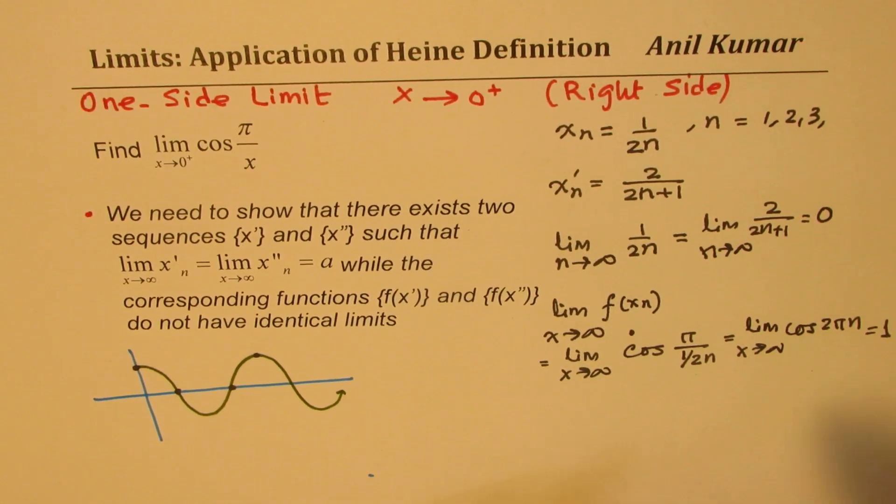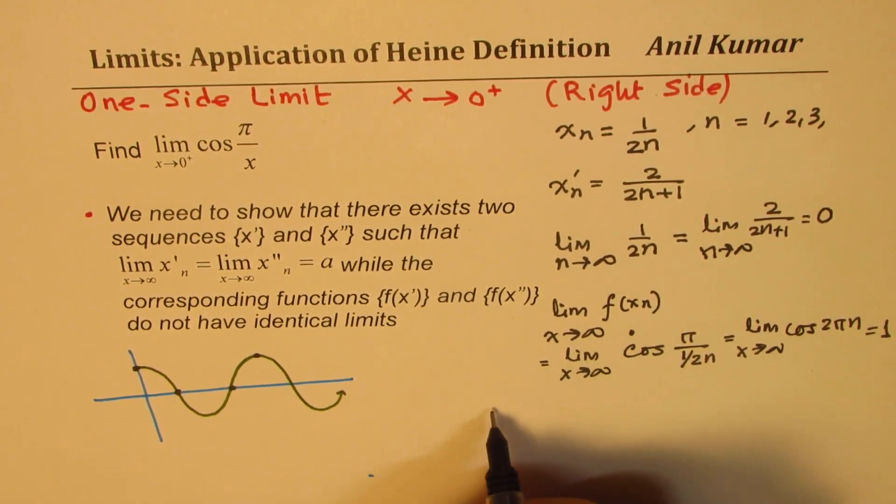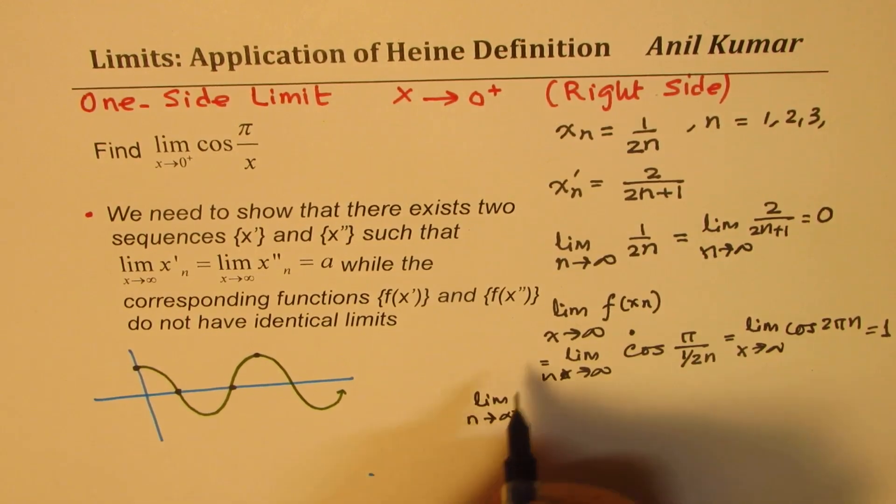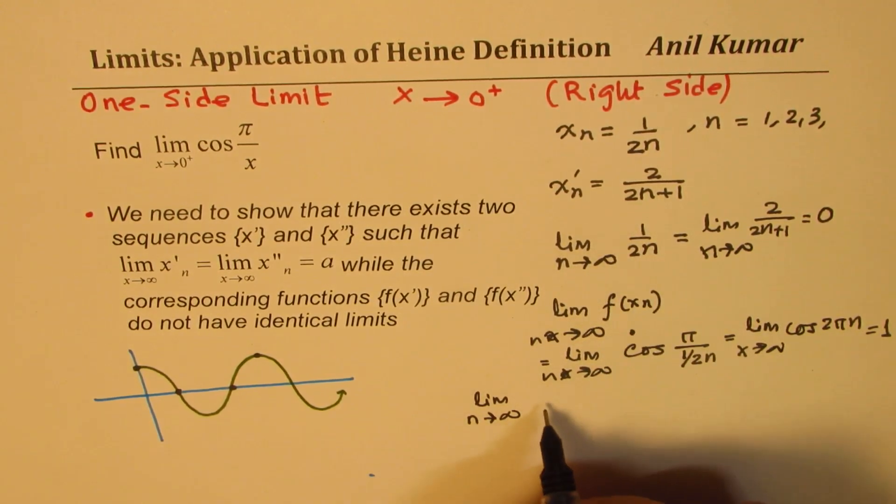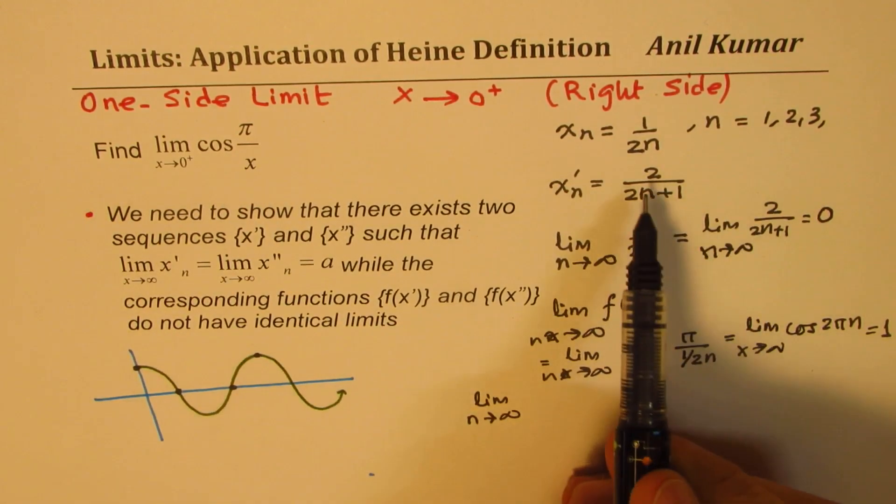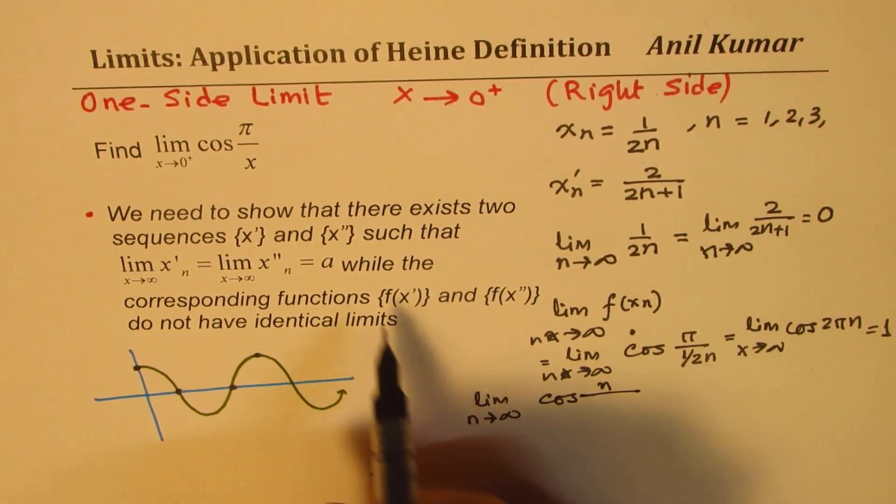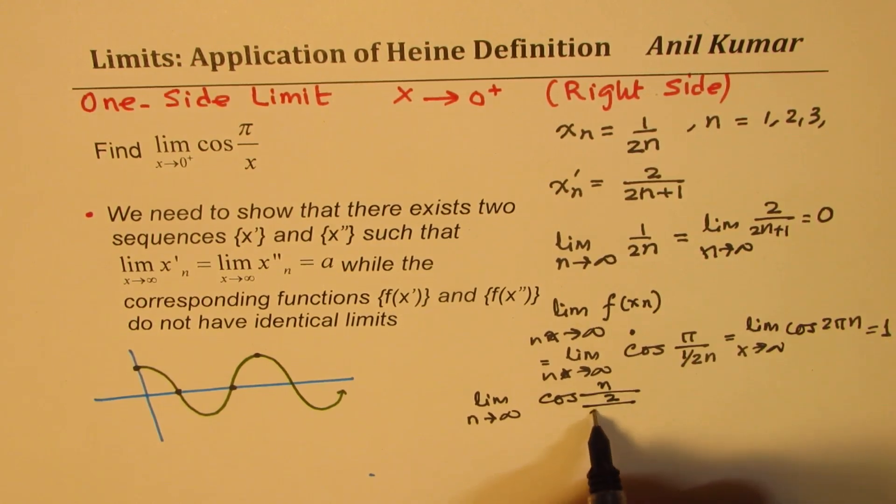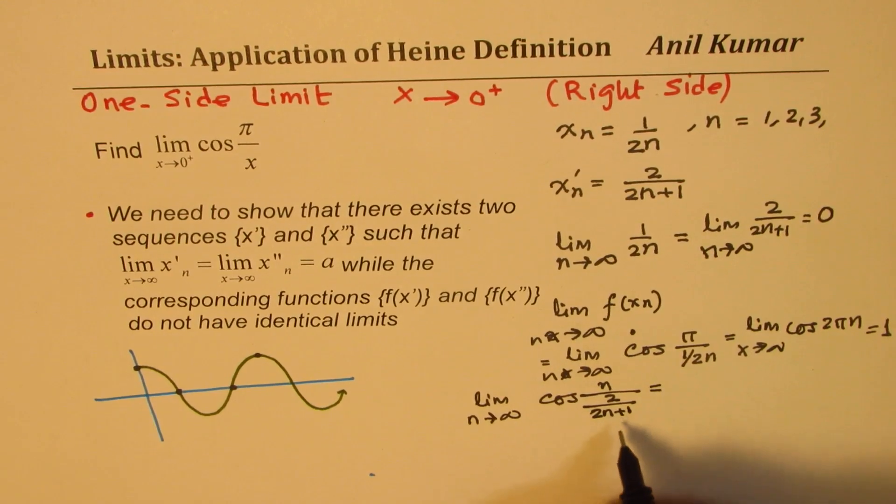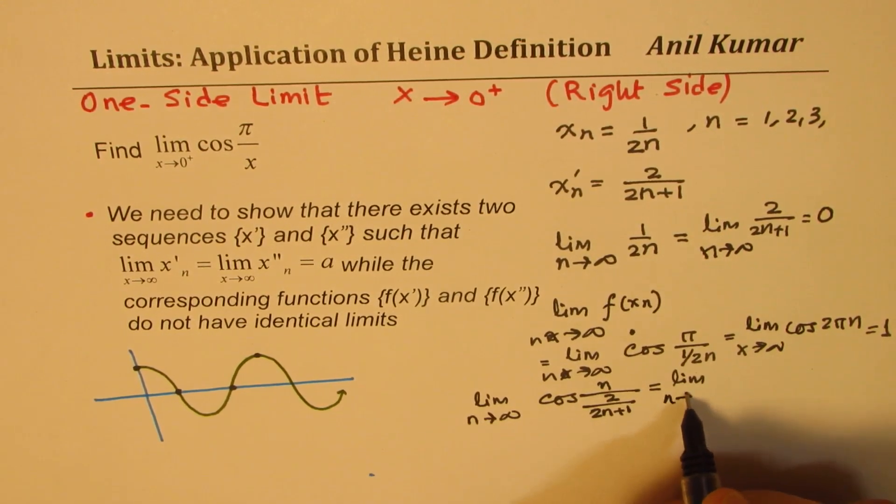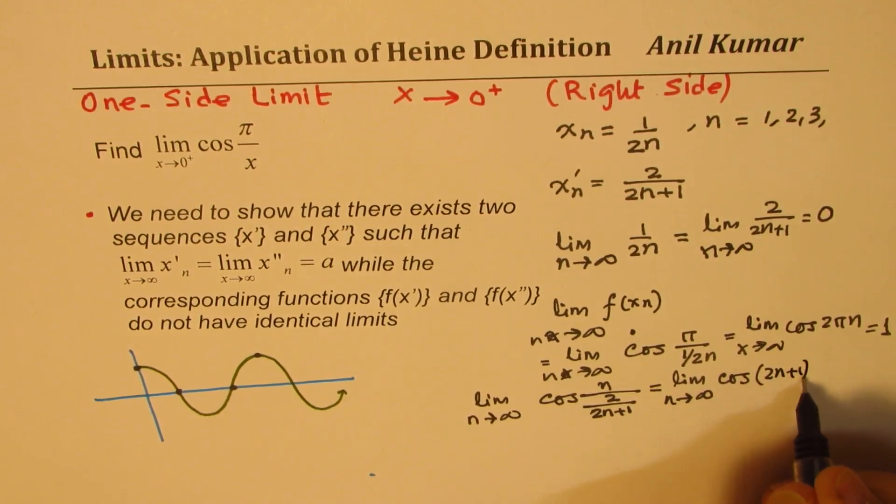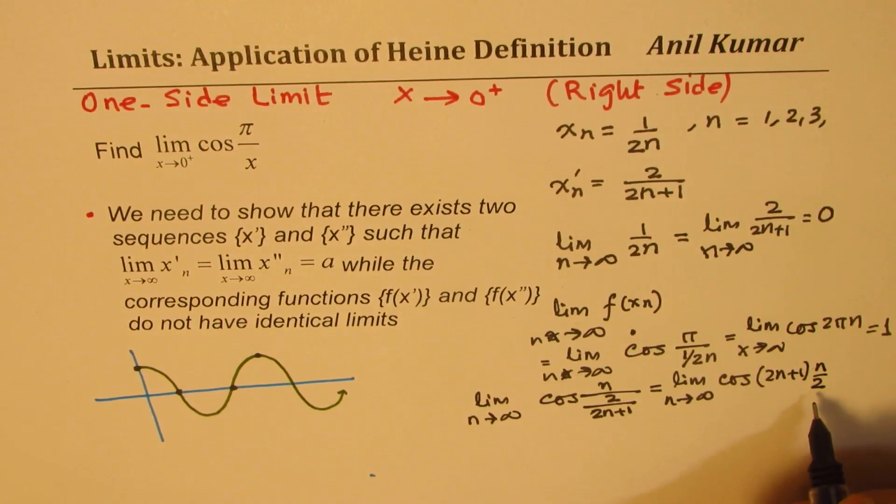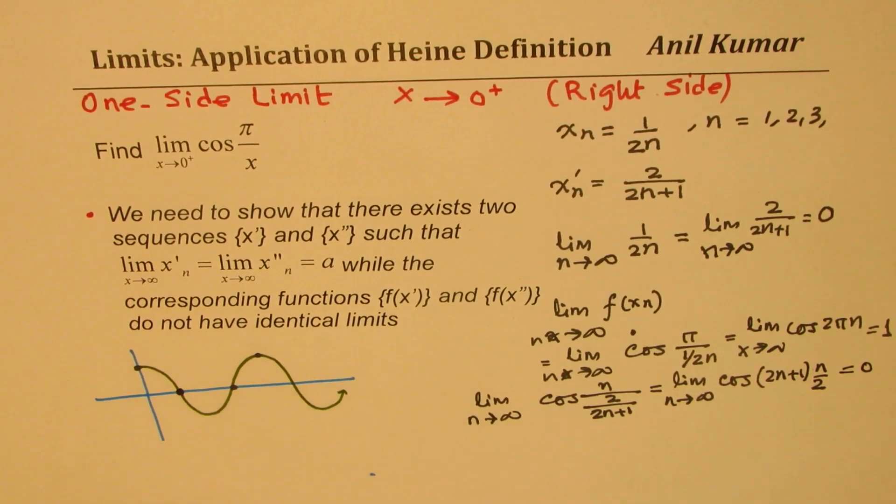Now let me shift this a bit on this side. Let's try for the second function, which is sequence rather. We have now the limit when n approaches infinity, this should be n, f of xn. So for the second function it should be limit of replacing x with 2 over this, we get cos of π over, instead of x I'll write 2 over 2n plus 1. You could rewrite this by taking it on the top as limit n approaches infinity. So we have cos of 2n plus 1 times π by 2. And for π by 2 we know it is 0.